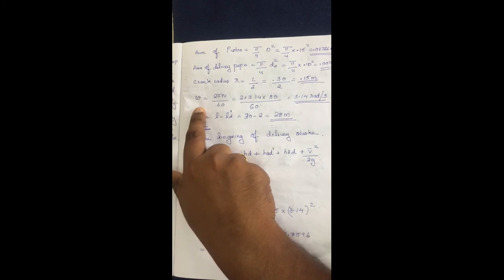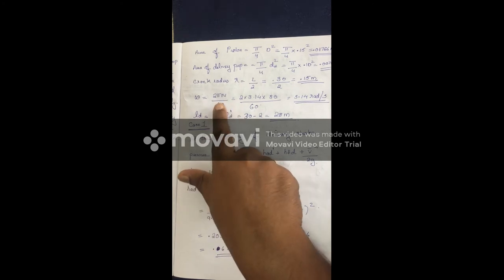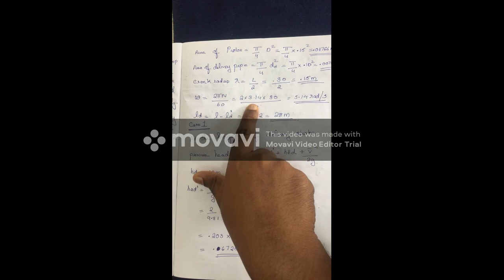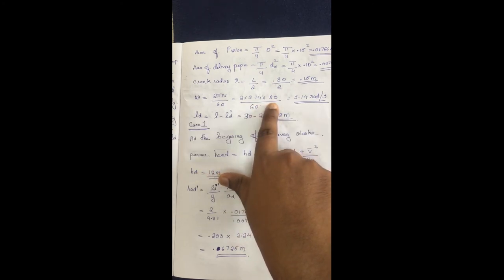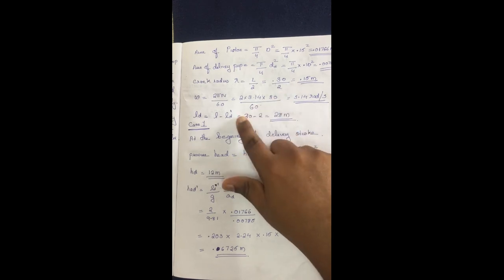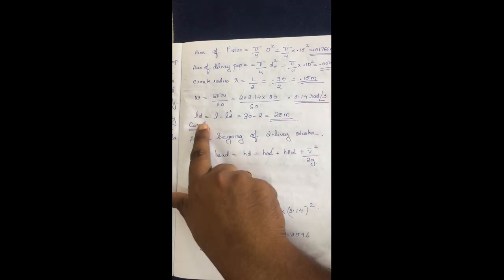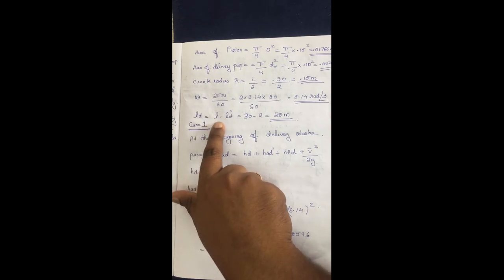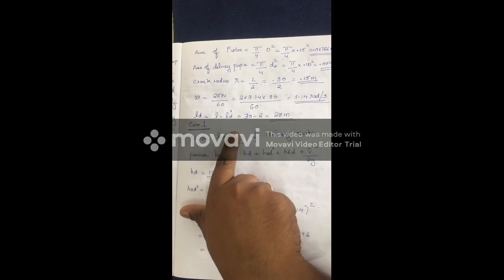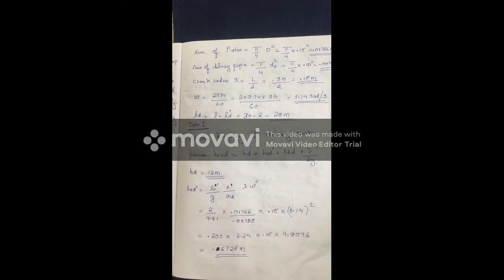Angular velocity: ω = 2πN/60, where N = 30 rpm. Total length of delivery pipe = 30 m. Air vessel is fitted at 2 m from the pump. The distance from cylinder centre to air vessel is L_d' = 2 m. The remaining length of delivery pipe beyond the air vessel, L_d, is the discharge pipe length.